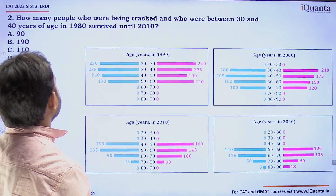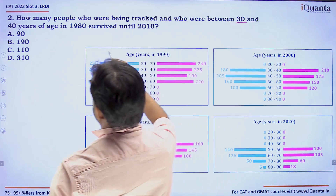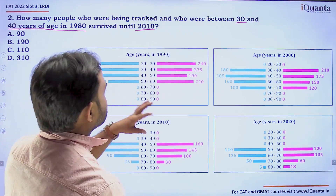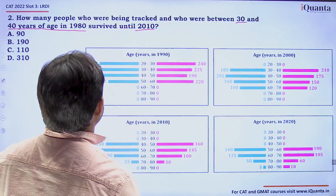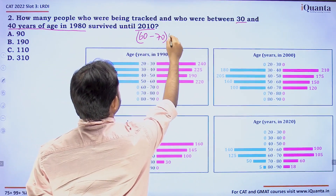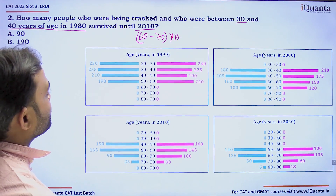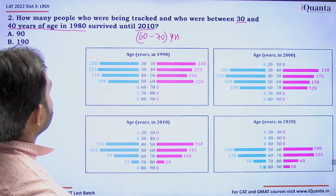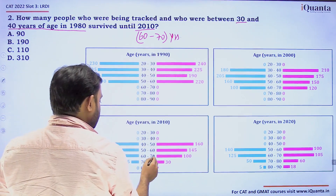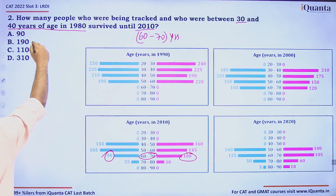Question 2: How many people who were being tracked and who were between 30 and 40 years of age in 1980 survived until 2010? Those aged 30–40 in 1980 would be 60–70 years old in 2010. Looking at the 2010 figure for the 60–70 age group: males = 90 and females = 100. So 90 + 100 = 190 people survived. Option B is correct.